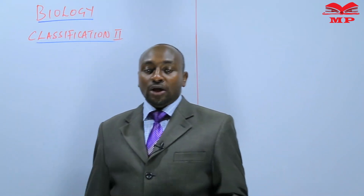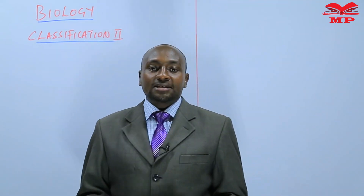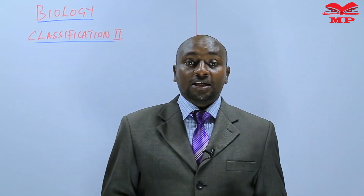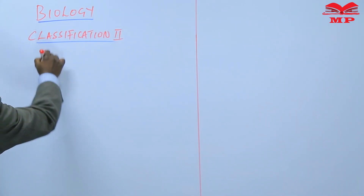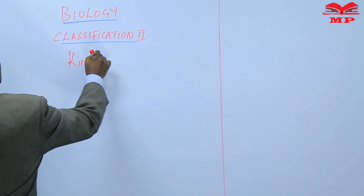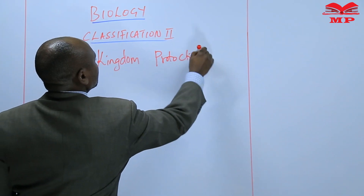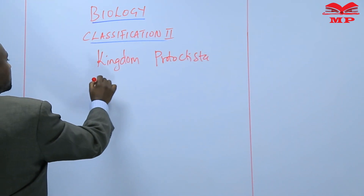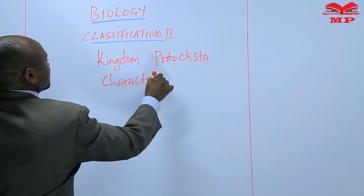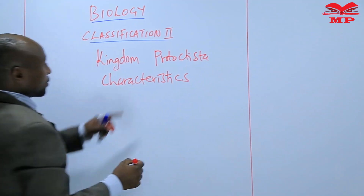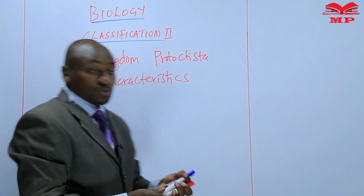So today we are going to continue with the characteristics and see more characteristics as far as the kingdom Protoctista is concerned. Note that Protoctista should start with a capital P.